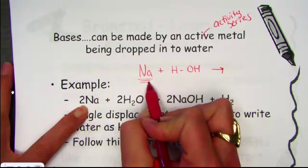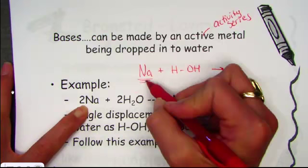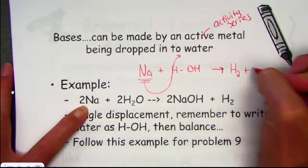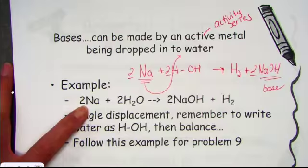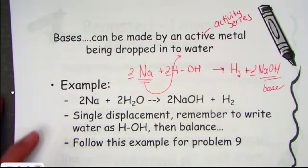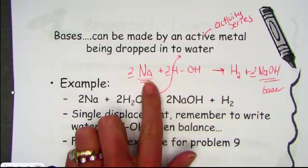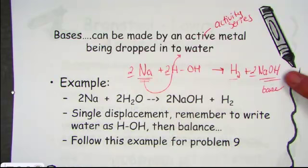If we have an active metal such as sodium, or really any of the alkali metals from the first family — lithium, sodium, potassium, rubidium — they are indeed strong enough to displace the hydrogen from a water molecule and form what's called an Arrhenius base, such as NaOH. We've demonstrated this reaction several times in the lab. It's a single displacement reaction where sodium kicks out hydrogen, forming hydrogen gas.